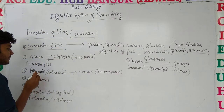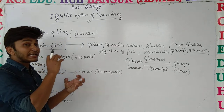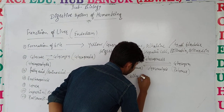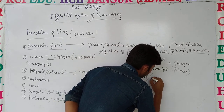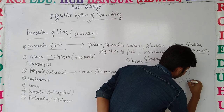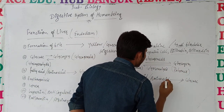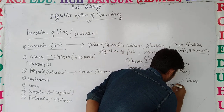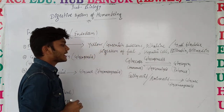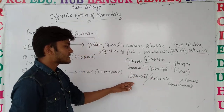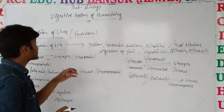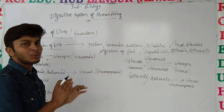इसके बाद बात करते हैं कि यह जो liver है, इसके अंदर fatty acids and amino acids are also converted into glucose. And this process is known as gluconeogenesis — the process in which fatty acids and amino acids are converted into glucose, and this also takes place in the liver.